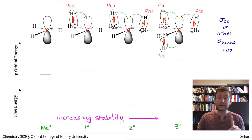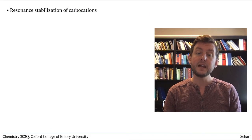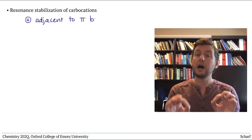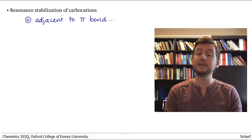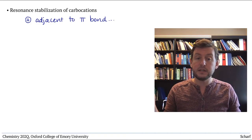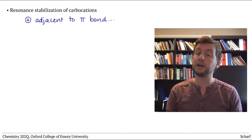One other factor can stabilize carbocations and much more effectively than hyperconjugation can. That's resonance. If a carbocation is adjacent to a pi bond, then that positive charge can be delocalized, spread over several atoms, and this makes the carbocation much more stable than it otherwise would be.